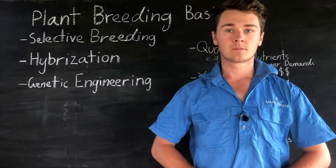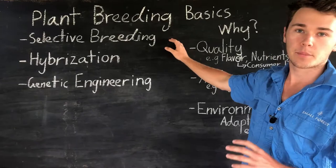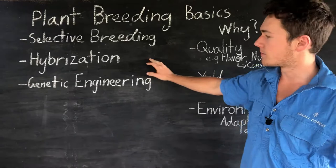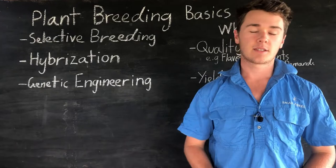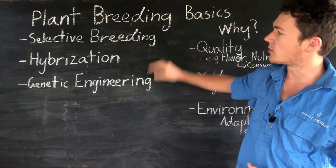In this video we'll be specifically looking at three different ways we can change our plants' genotypes. The first one is selective breeding, next is hybridization, and then genetic engineering. We'll be looking at all these different strategies, the positives and negatives for each, and why we would consider using one over the other.